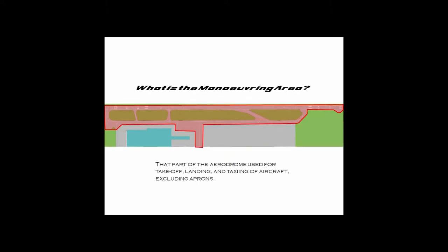The taxiways are that road network that takes the aircraft from the aprons to the runway, or vice versa. The apron is that section of the airport where planes park — an aircraft at the gate is on the apron. However, an aircraft being at the gate is not under the jurisdiction of air traffic controllers.